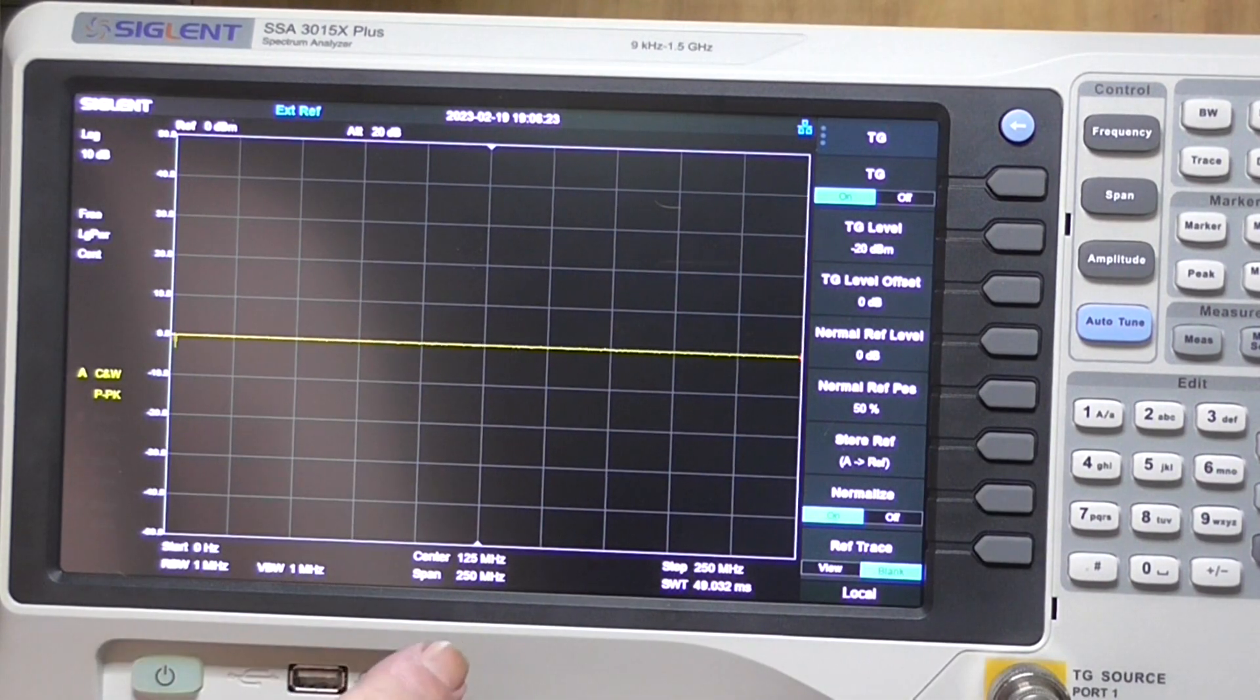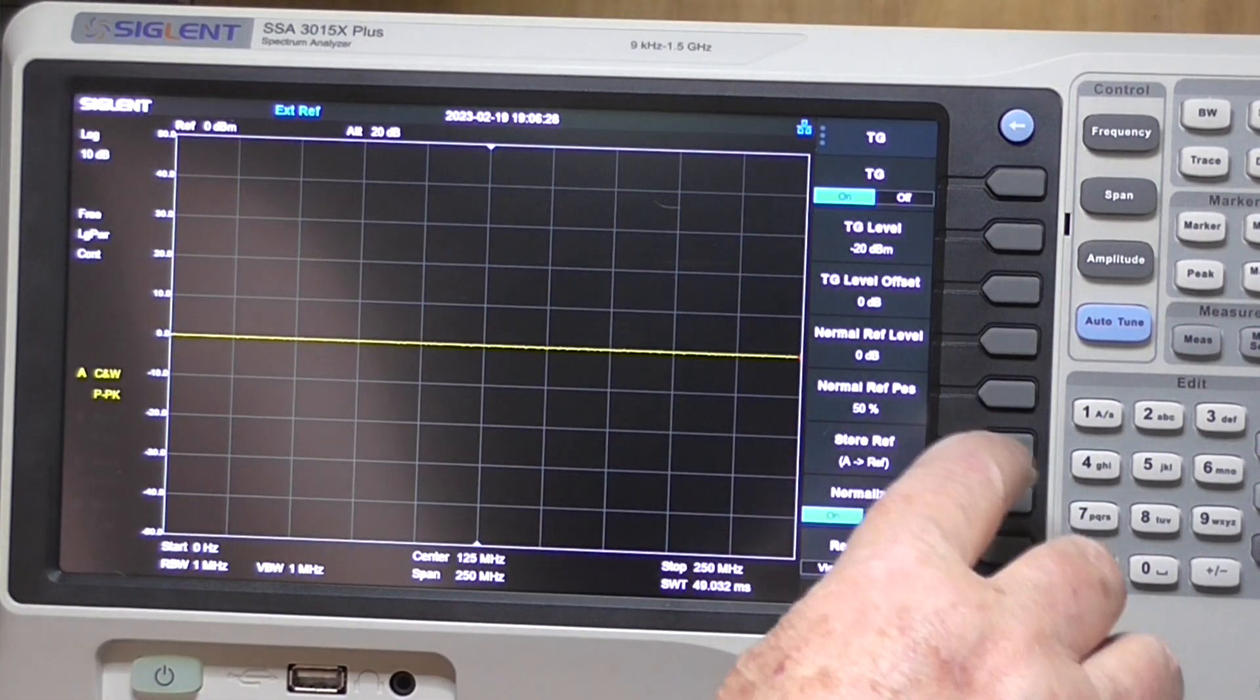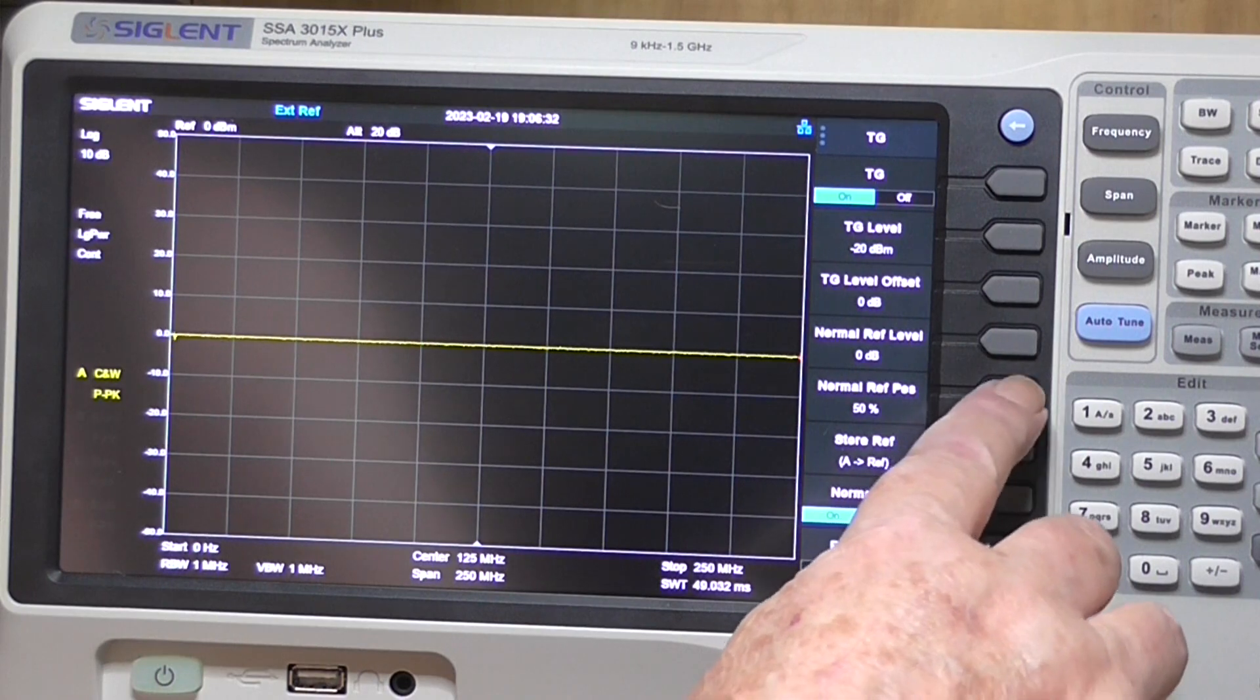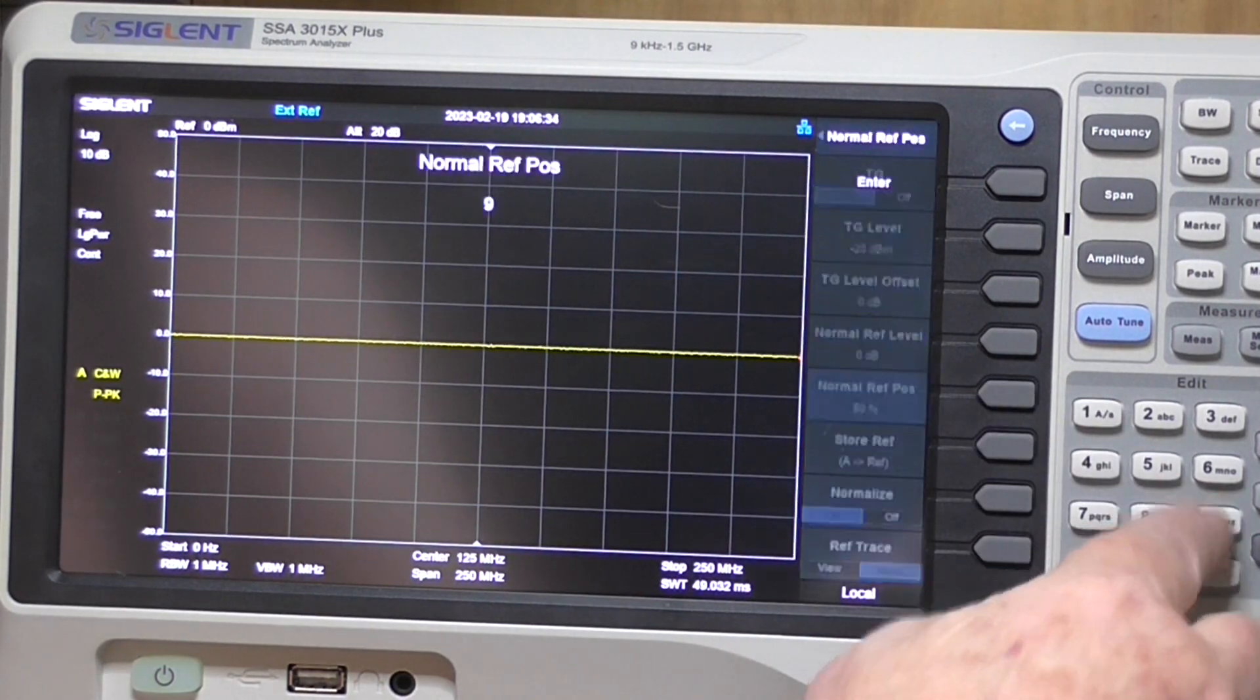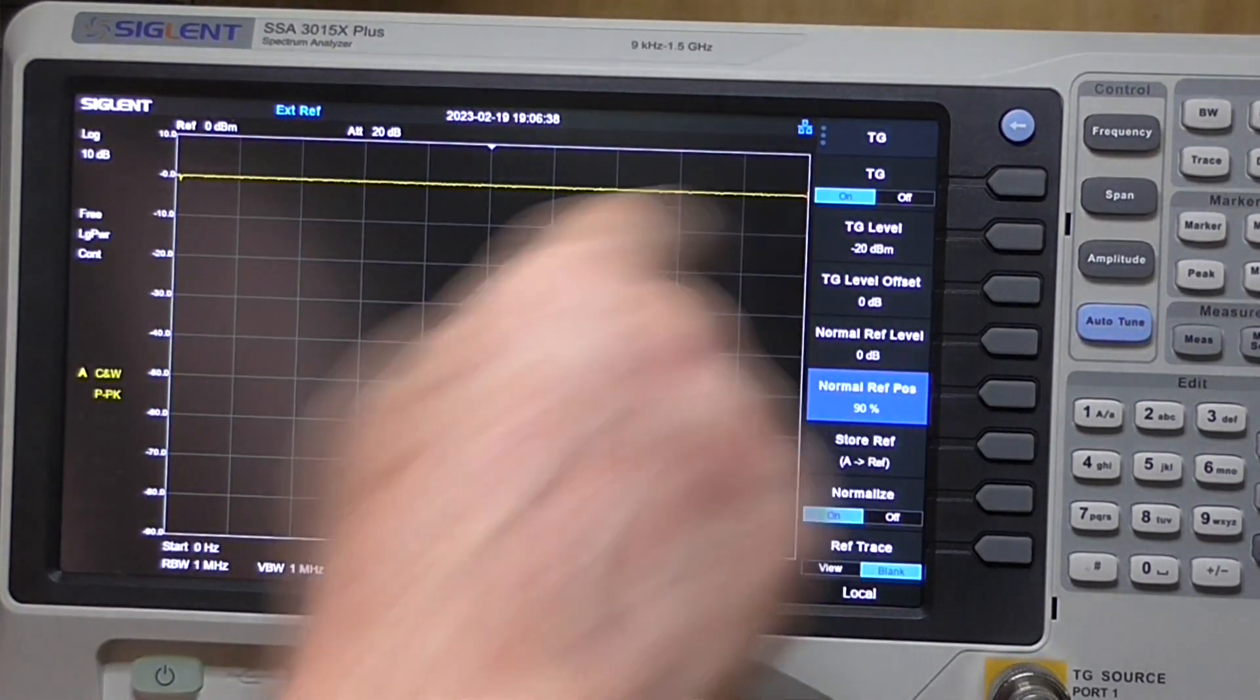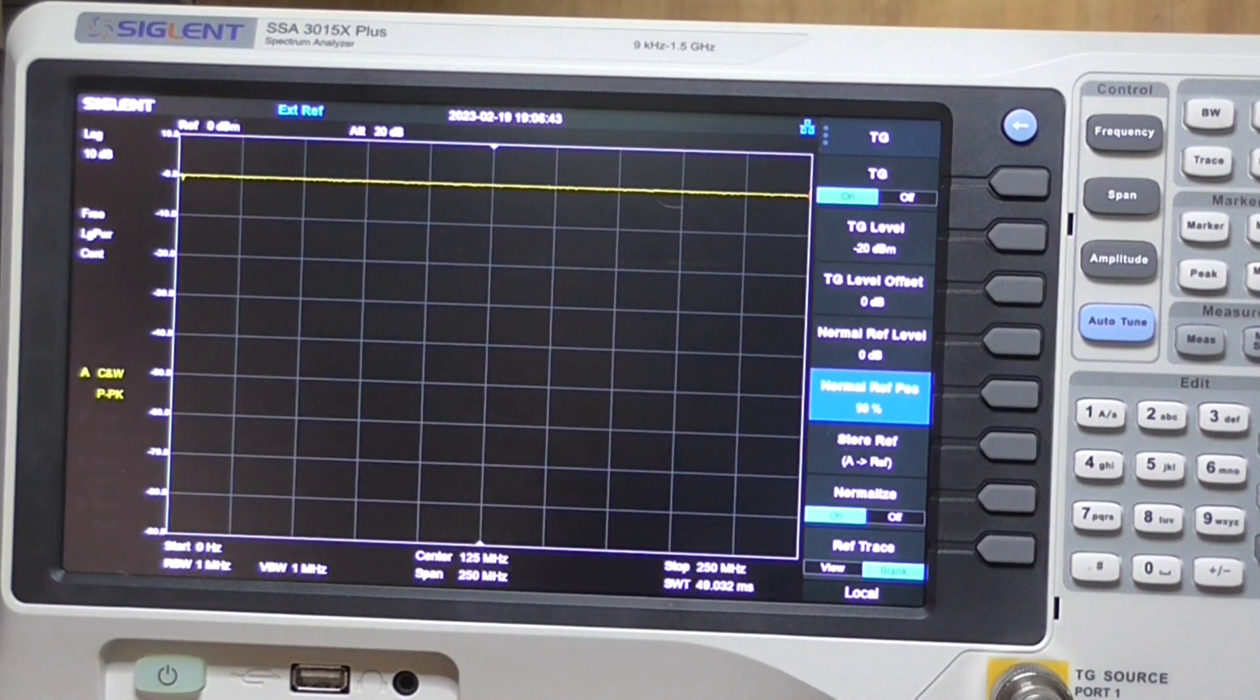I want our 0 dB level higher, so let's set the reference position to 90. Okay, zero is up there—we should be able to see any attenuation down below. That's set up.